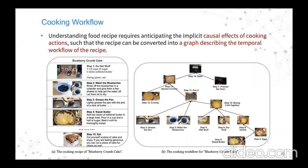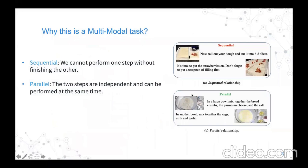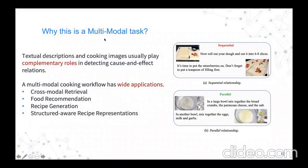To build such a cooking workflow for a food recipe, we need to detect whether two cooking steps are in parallel or in sequential. If two cooking steps are in sequential, it means that we cannot perform one step without finishing the other. And if two cooking steps are in parallel, this means that these two steps are independent and can be performed at the same time. In this work, we argue that detecting such a relationship is not an easy task because it requires multi-modal information — we find that text descriptions and cooking images usually play a complementary role in detecting such causal and effect relations.